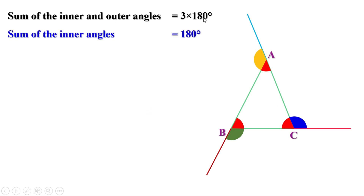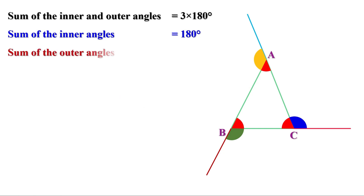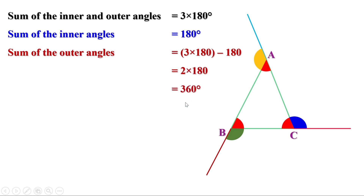To find the sum of outer angles, we subtract the sum of inner angles from the total sum of angles. That is: sum of outer angles = 3 × 180 − 180 = 2 × 180 = 360 degrees. So the sum of the outer angles of a triangle is 360 degrees.